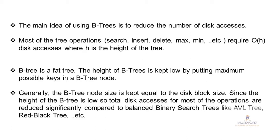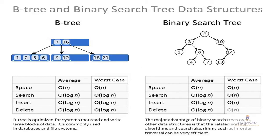Keys ka size increase hoga, number of keys jada honge, to height kam hogi, jis ki wajah se aap ke jo operations hain wo jaldi perform hone lagenge aur performance increase hogi. Some complexity bhi compare kar sakte hain. We have two trees: B-tree and binary search tree. Agar hum in operations ki complexity ko compare karein — B-tree ka average case aur binary search tree ka average case bilkul same hai for any operation: space, search, insert, delete — all are O(log n).